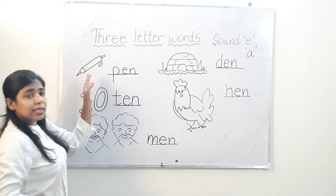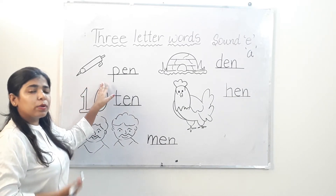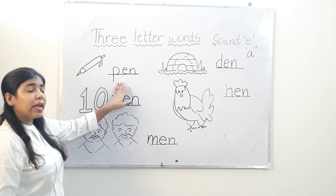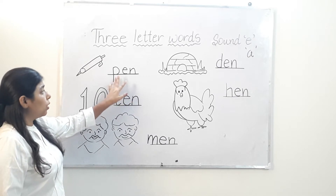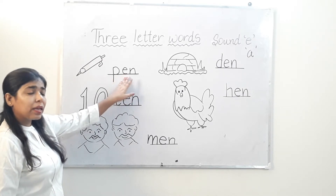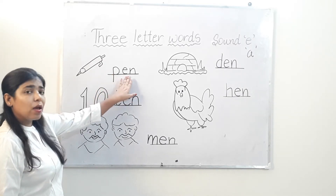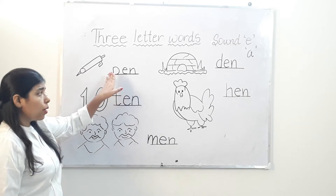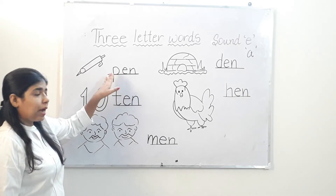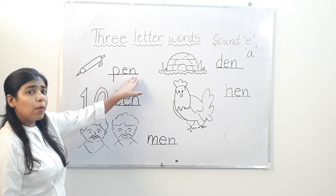Which picture is this? Pen. Which picture is this? Pen. And how we will write pen? P, E, N — pen.